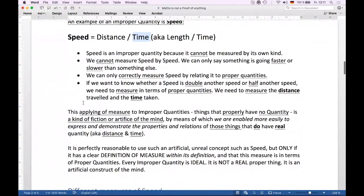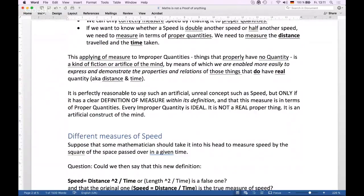And just to make this clear so that mathematicians don't scream, it is perfectly reasonable to use such an artificial, unreal concept such as speed, but only if it has a clear definition of measure within its very definition and that this measure is in terms of proper quantities, because every improper quantity is just an idea. It's not a real proper thing. It really is just a construct of the mind. So you have to be able to define it in terms of real things in its definition. Otherwise, it would not be a correct object of mathematical reasoning if we just made stuff up.